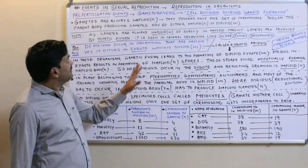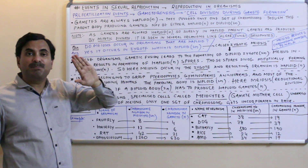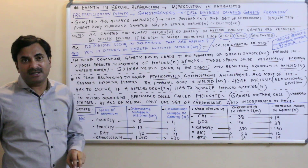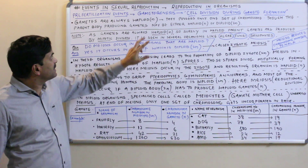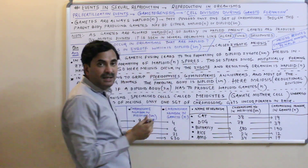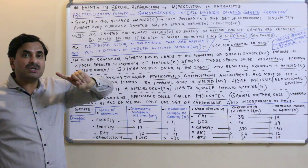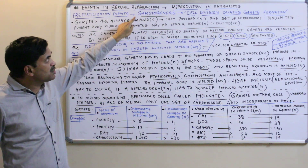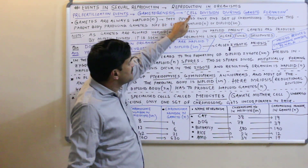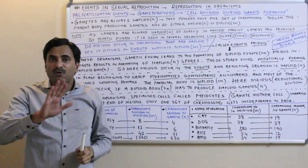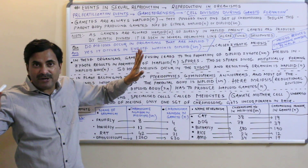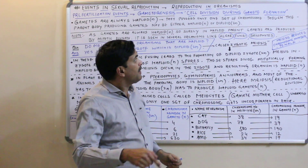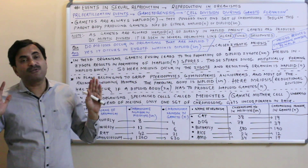Hello to all. In the last video we discussed about pre-fertilization events. We know that in pre-fertilization events there are two important features: one is gametogenesis and another is gamete transfer. We already started a part of gametogenesis in the last video, but today in this video on gametogenesis we are going to study cell division during gamete formation.